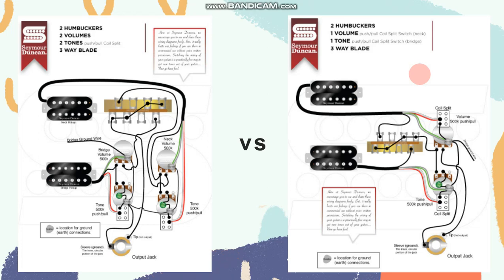The second circuit uses one volume and one tone to optimize aggressive guitar playing, such as rock, pop, hardcore, and other fast-paced music. The first picture has two volumes, while the second picture has one volume.